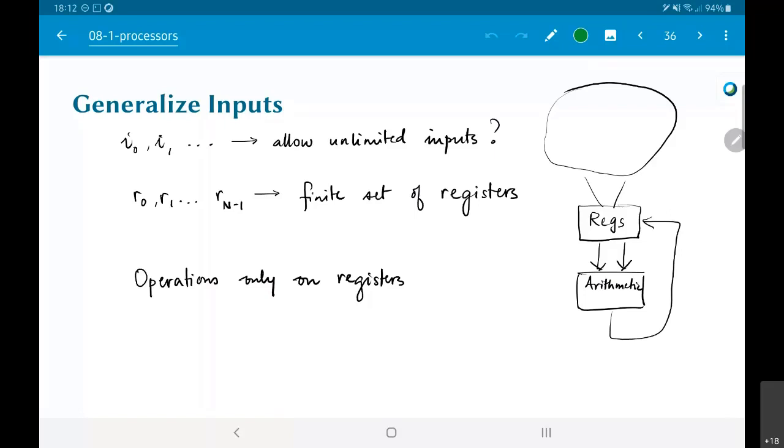All that it's saying is, look, previously the arithmetic was taking inputs from either the registers or from the main inputs. Instead, let me force the arithmetic unit to only take values coming from the registers, and its output also has to go back to the registers.